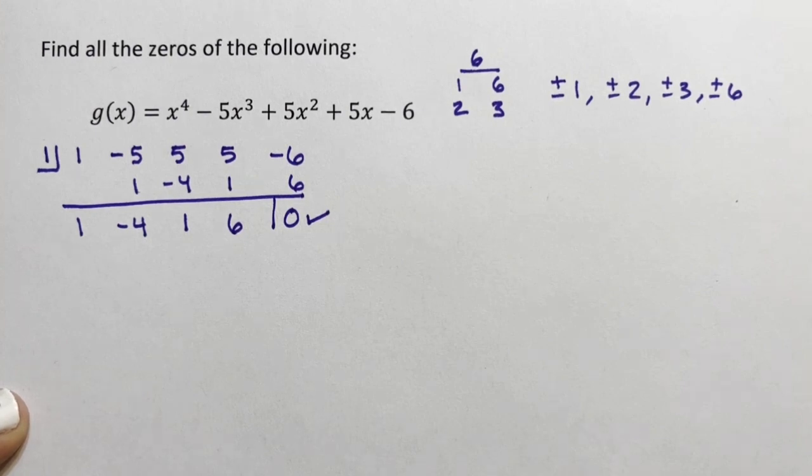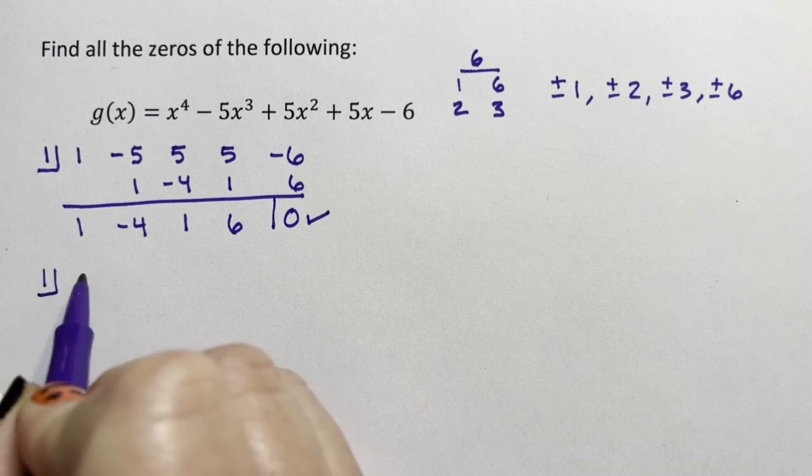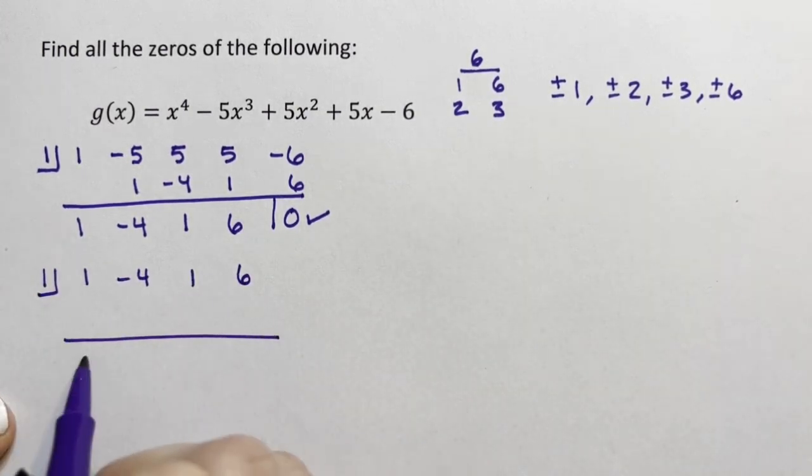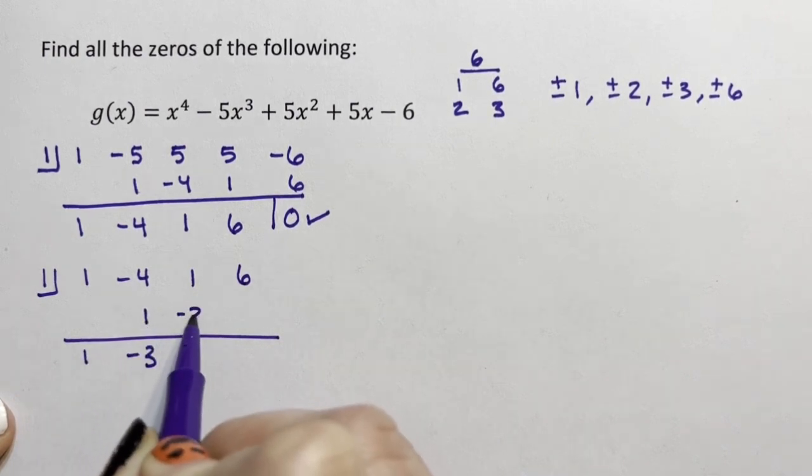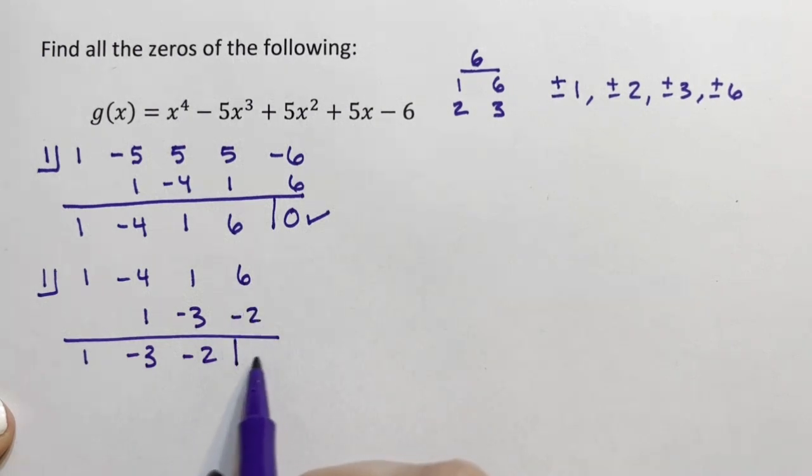I'm going to try it again. Sometimes we have a zero of multiplicity more than one, so maybe 1 is a factor twice. So I'm going to test it again: 1, -4, 1, 6. 1, 1, -3, -3, -2. This isn't looking good. 4. All right, so 1 is a zero once but not twice.